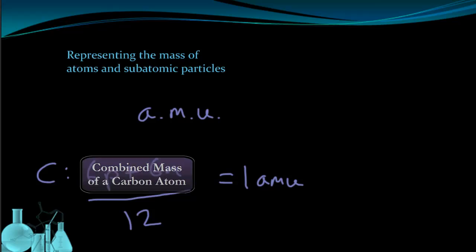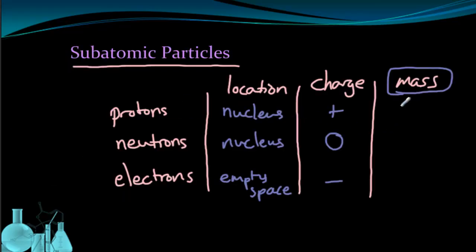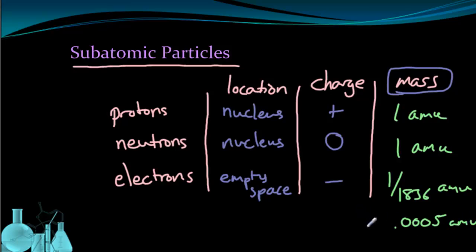So using atomic mass units, we can now fill this in a little bit more effectively. A proton is one AMU. A neutron is one AMU as well. Now an electron is close to one two thousandth of an AMU. It's actually one out of 1,836 instead of 2,000 but it's pretty close. We can also represent that with roughly 0.0005 AMU for an electron. Now for most purposes, we're going to treat it as zero because it's pretty negligible. It's a really, really small amount.